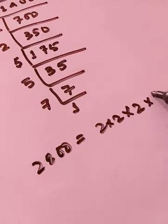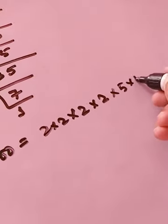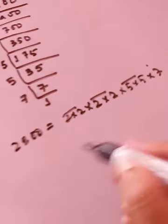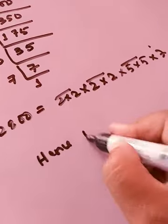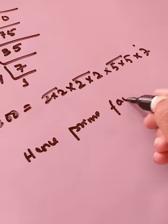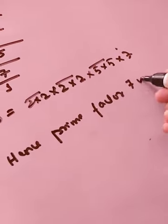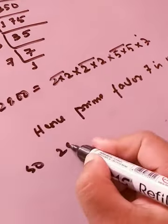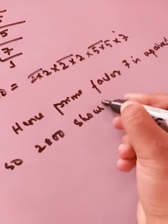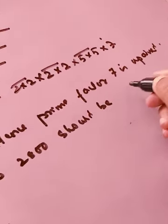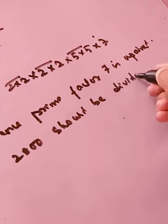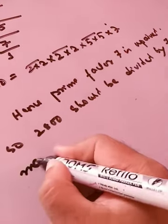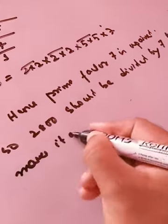So clearly we have seen that 7 is unpaired. Hence prime factor 7 is unpaired. So 2800 should be divided by 7 to make it a perfect square.